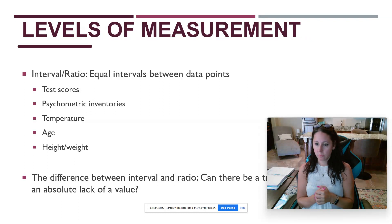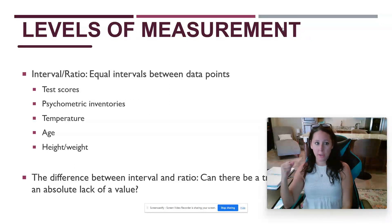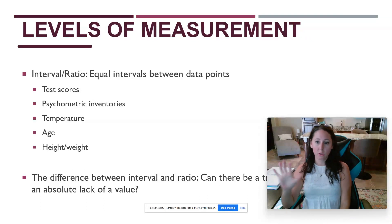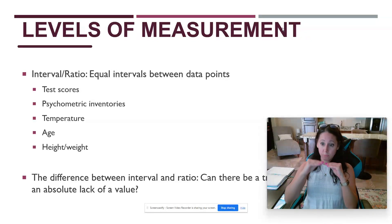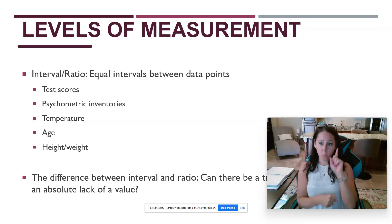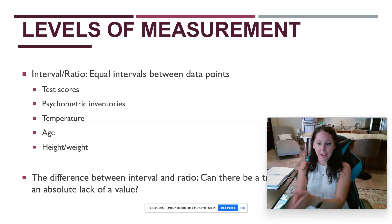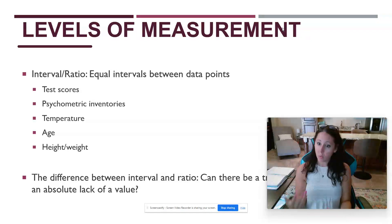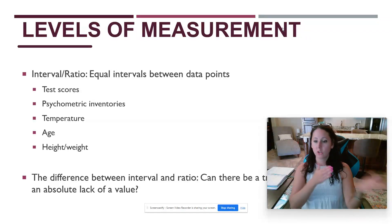If you take a psychometric inventory — say a scale measuring anxiety symptoms — where each symptom checked off is worth a point, I can standardize this. The difference between someone who scored a 50 and someone who scored a 42 will be the same in every situation. Temperature is another example: there's a five-degree difference between 80 and 85 degrees, just as there's a five-degree difference between 60 and 65 degrees — the same five points in actual temperature markers.